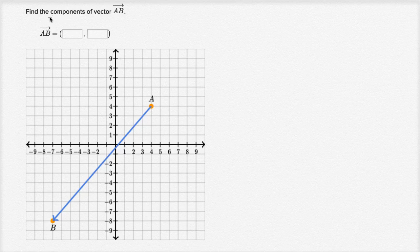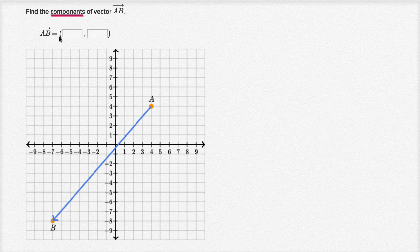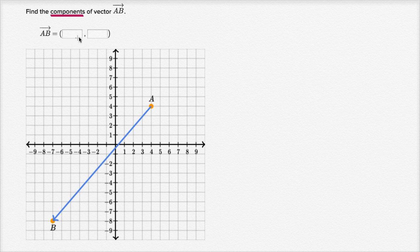Find the components of vector AB. When they're talking about the components, they're talking about breaking it down into, if we start at point A and we're finishing at point B, how much do we have to move in the x direction? This is going to be essentially our change in x.